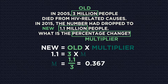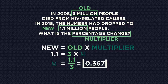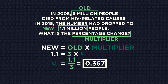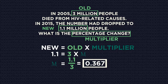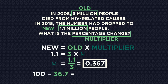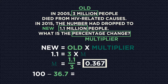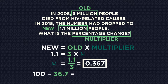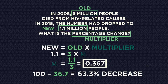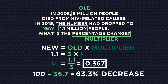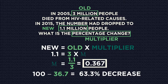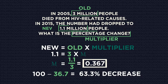We should remember that multipliers that are 0.something are percentage decreases. For percentage decreases, we need to subtract 36.7 from 100. There has been a 63.3% decrease in the number of HIV-related deaths since 2005.